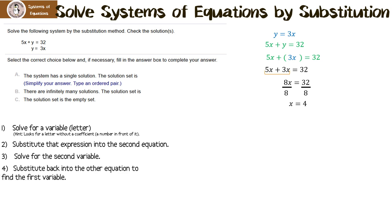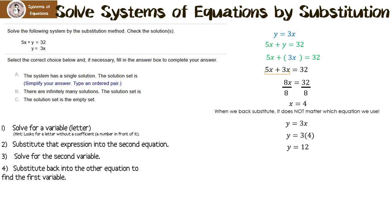We're going to substitute back into one of the equations to find the first variable. It really doesn't matter which one — we're going to end up with the same answer. I decided to use y equals 3x. We know x is 4, so I put 4 in for x. 3 times 4 is 12, so y equals 12. The system has a single solution, and it's the ordered pair 4, 12.